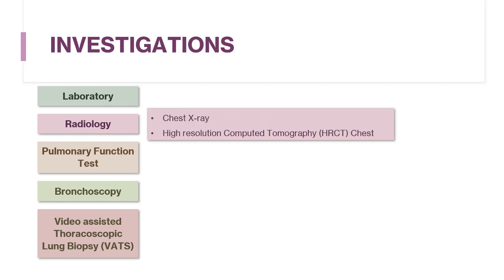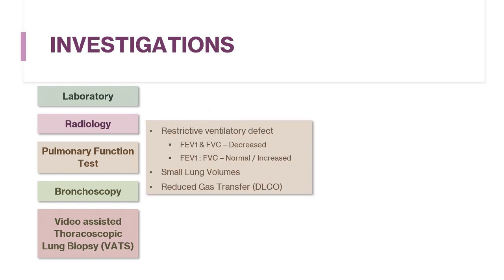Under radiological investigations, as already mentioned, HRCT chest may reveal ground glass appearance, reticulonodular shadowing, honeycombing, and traction bronchiectasis depending on the stage and extent of disease. HRCT is the preferred modality as it can confirm or exclude ILD, quantify disease extent, and in some cases help diagnose the cause. Pulmonary function tests will show a restrictive lung defect and small lung volumes with reduced gas transfer. Exercise tests may also be performed to assess exercise tolerance and exercise-related falls in oxygen saturation.